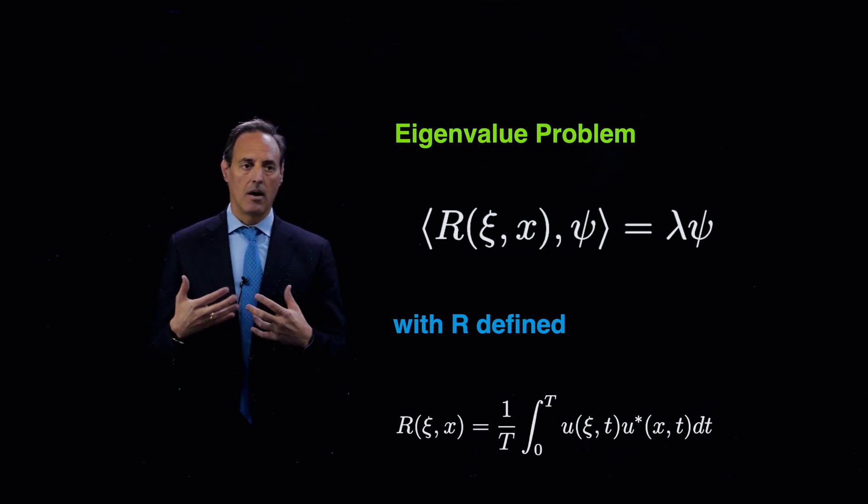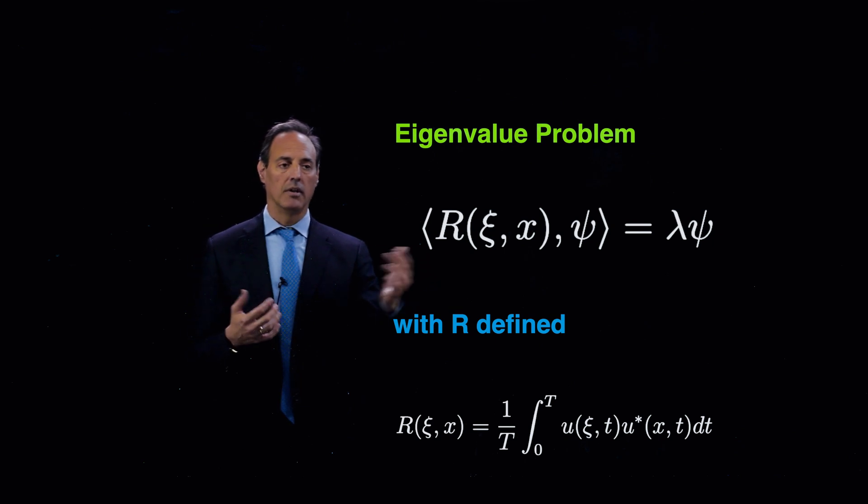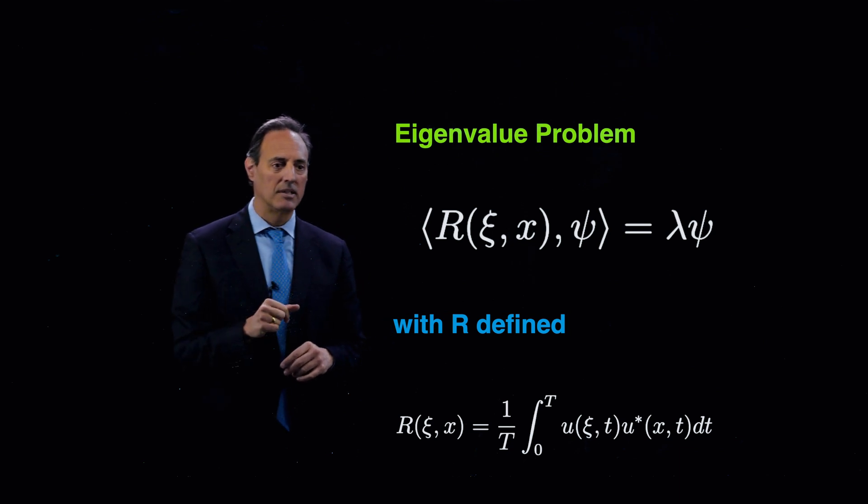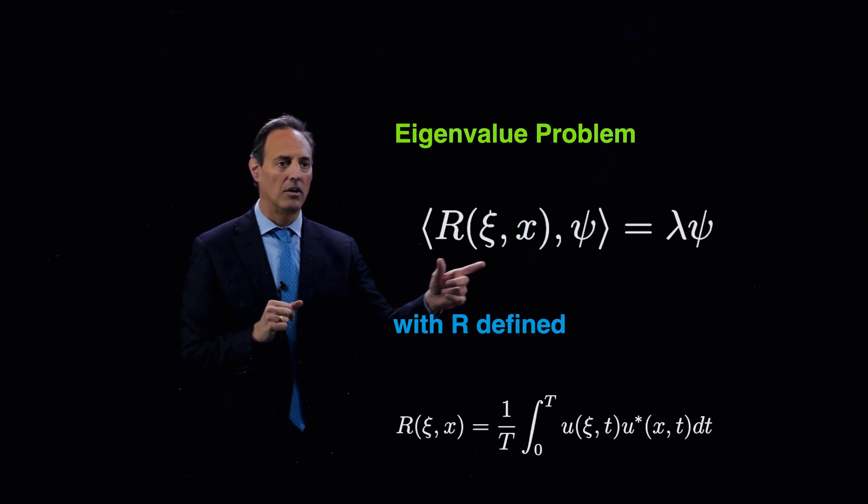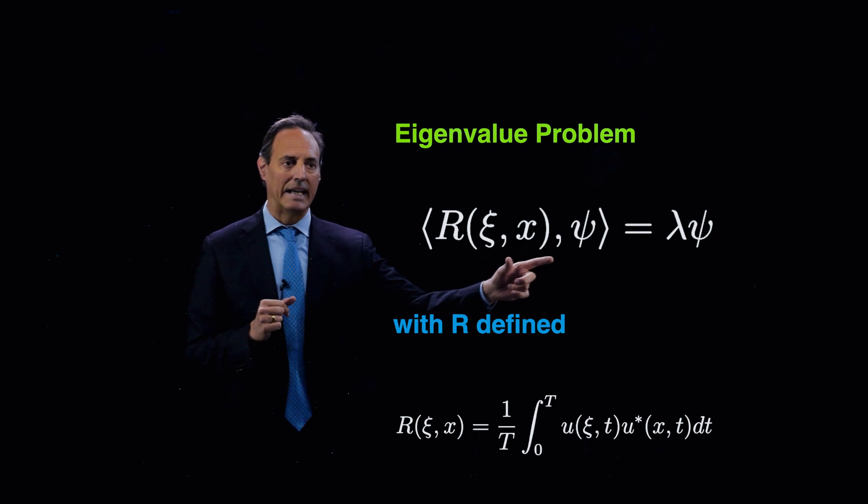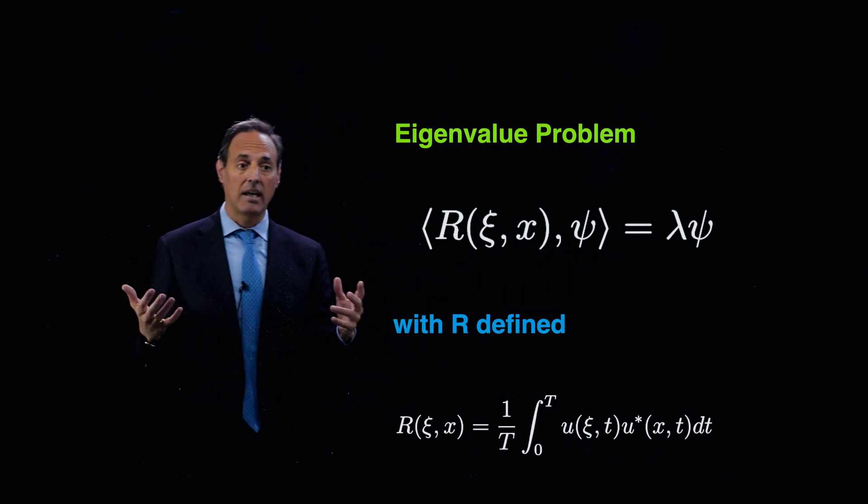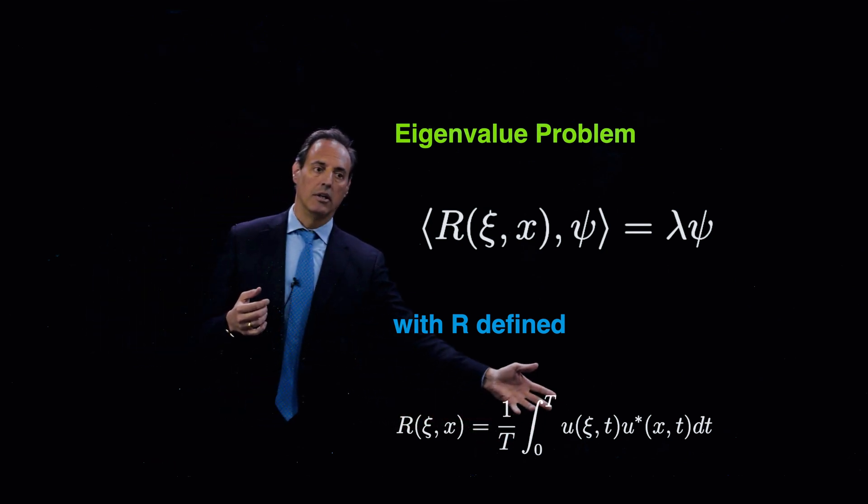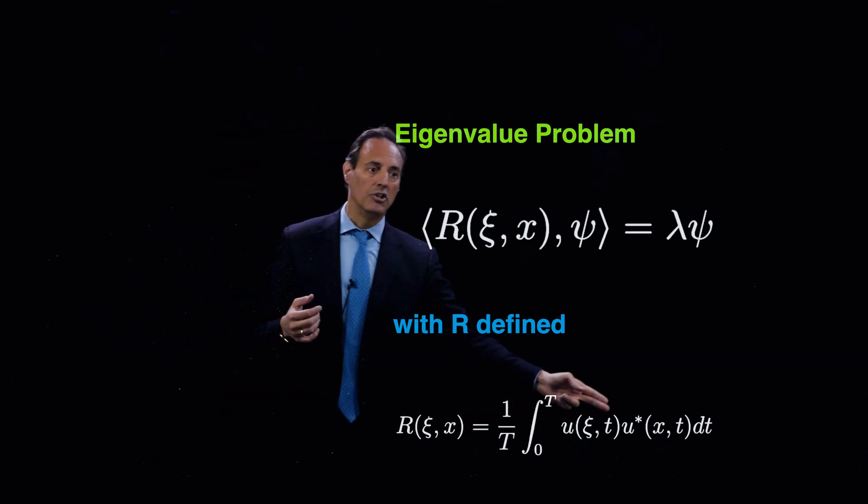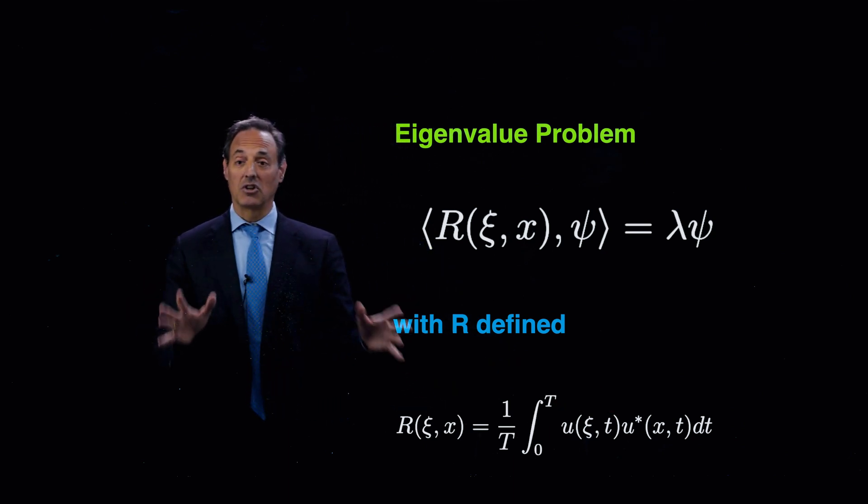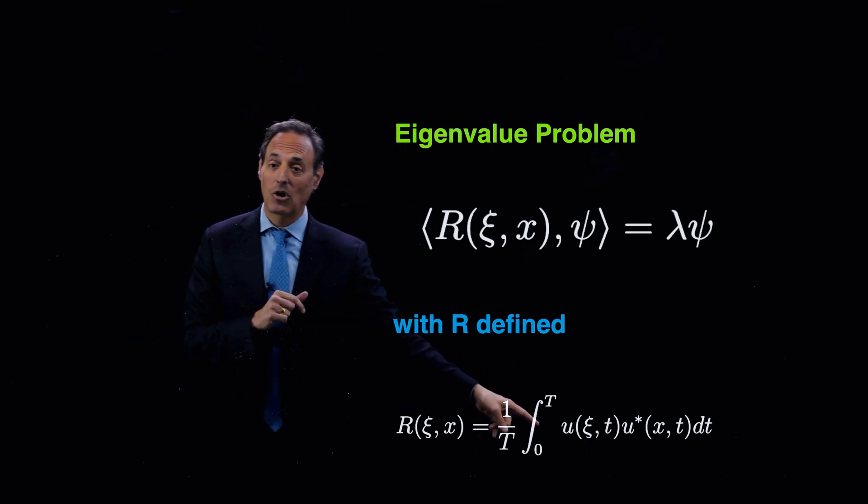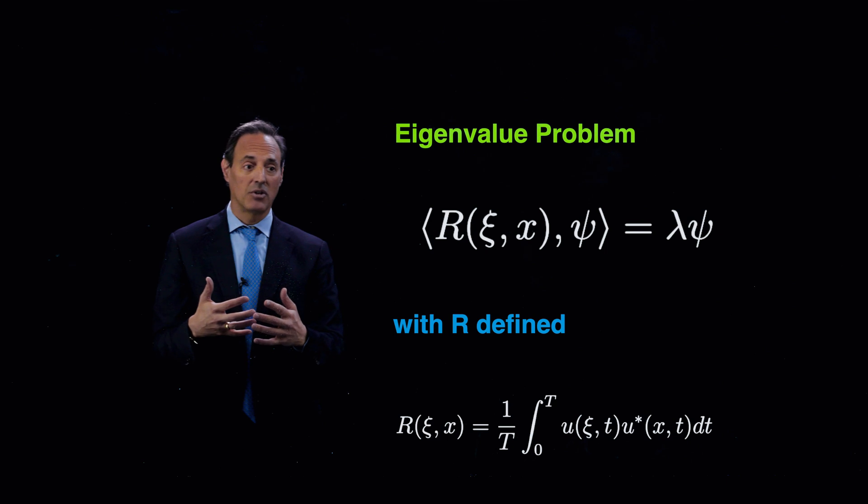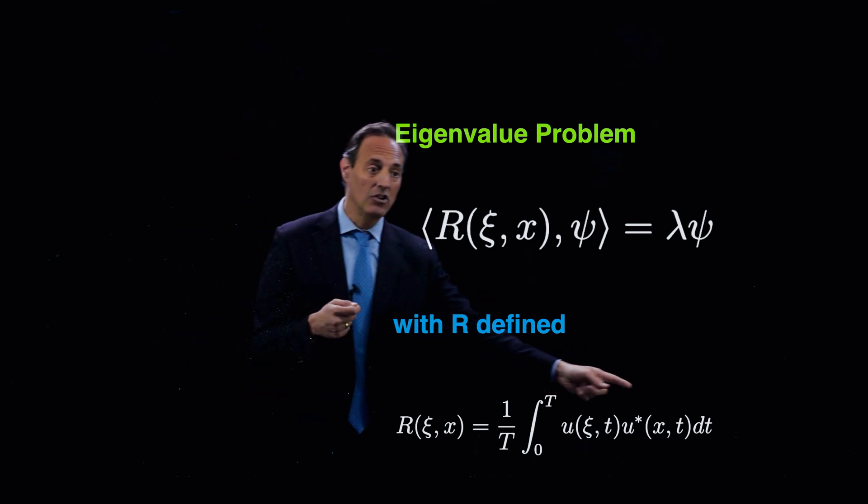What you end up getting after a little bit of algebra is that the solution to that optimization problem gives you this here as an eigenvalue problem for psi. And the eigenvalue problem is a little different than normal, it's an integral equation. In particular, you have an inner product here of R against psi is equal to lambda psi. So that's your eigenvalue problem, where R is defined as 1 over T integral 0 to T of U U star.